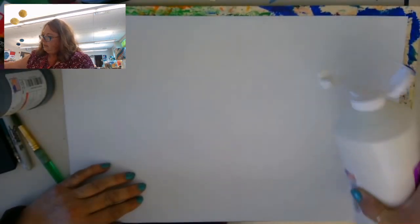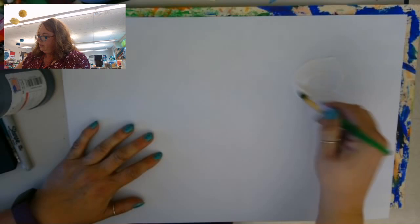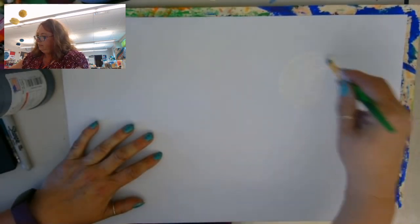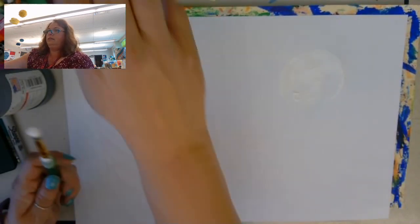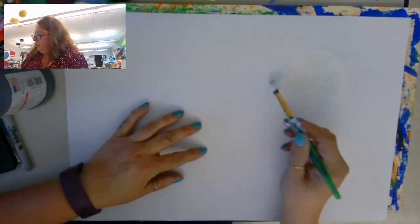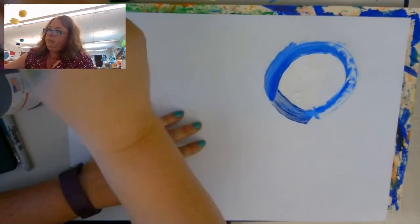The first thing I'm going to put on my paper is a little bit of white because I want to make the moon. I'm going to take that and spread it into a circle with the moon, like a full moon. Next, I'm going to use some blue. I'm going to paint around the moon with the blue.